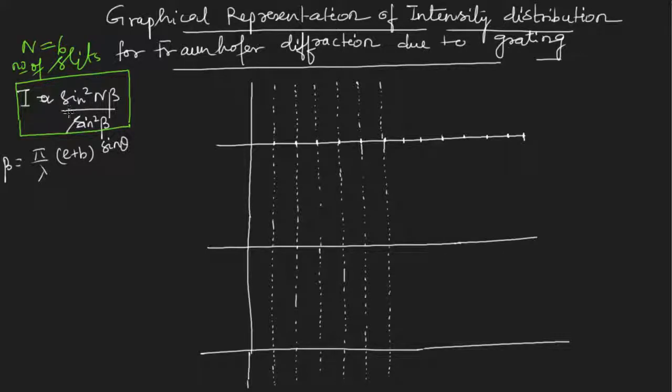The diffraction I am not taking into account. First I want to see the intensity pattern due to sin square n beta by sin square beta, where beta is pi by lambda times e plus b times sin theta. Let us now try to plot this on the graph. Here I have drawn three graphs. The first one I will try to plot sin square n beta. Second one I will try to plot sin square beta. And then I will try to combine these two curves and see how my intensity modifies.